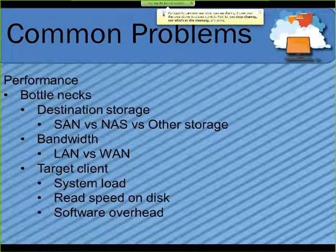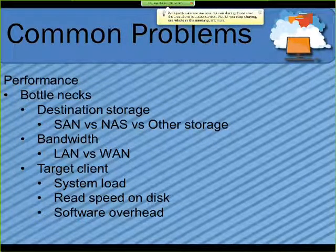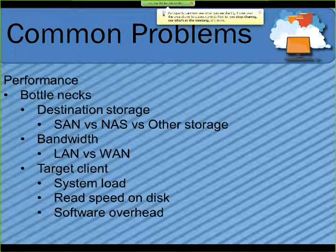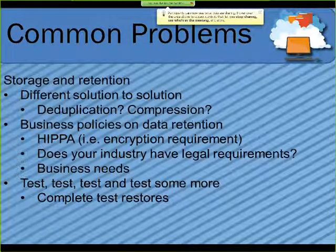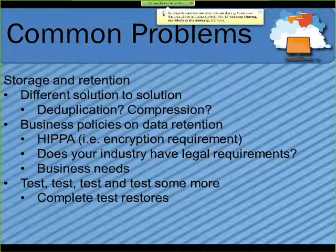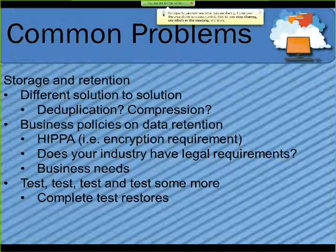The target client is also often overlooked — there are read disk limits to keep in mind, other load on the system from normal user tasks or running services, and in most solutions some software overhead, such as packaging data into a proprietary file format. Storage and retention also varies a lot. Some solutions do deduplication and compression, but bear in mind that compressed file formats add extra software overhead during restores and backups.